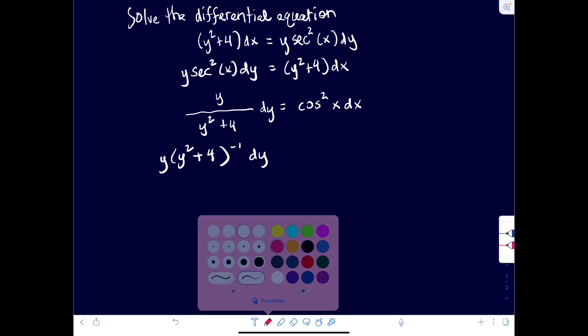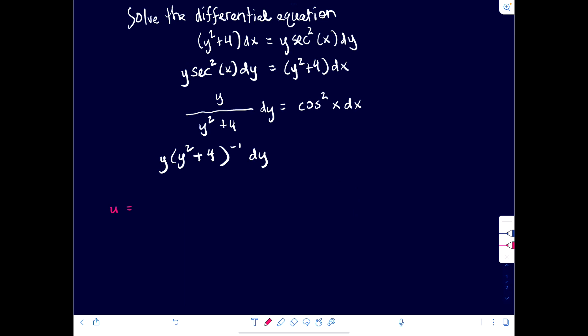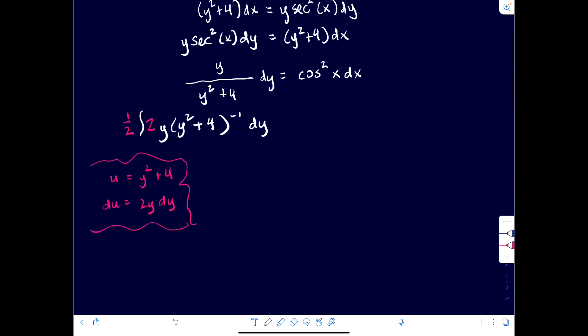So you can either do an official u substitution or you can use pattern recognition. So if somebody did a u substitution, you would let u equal to y squared plus 4 and du would equal to 2y dy. And I have the y dy, but I don't have the 2. Does that make sense? So in order to do this, I need the 2. But I can adjust it by multiplying by 1. So I'm going to multiply on the outside of the integral by one half. And now I'm not going to actually put the u in there because I have everything I need. Does that make sense?